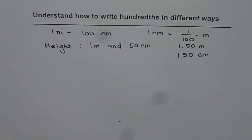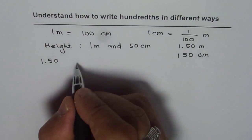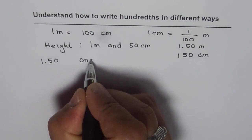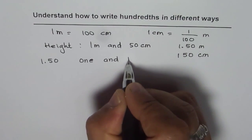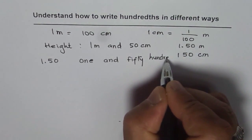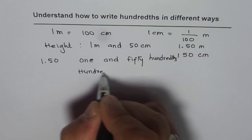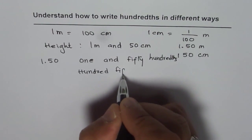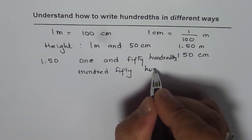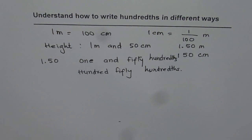Do you see that? So a decimal number one point five zero can be read as one and fifty hundredths, or one hundred fifty hundredths. That is the foundation for our understanding of hundredths. Now let's write a few hundredths in a different way.